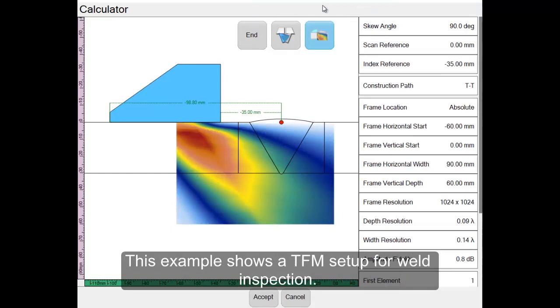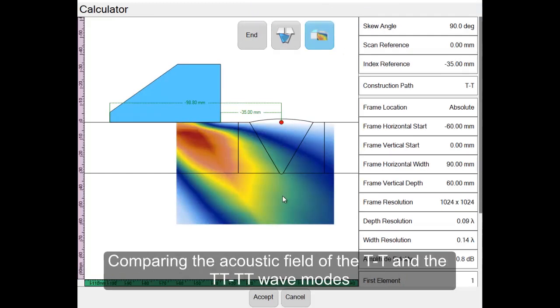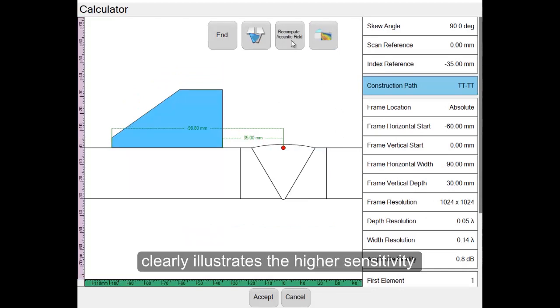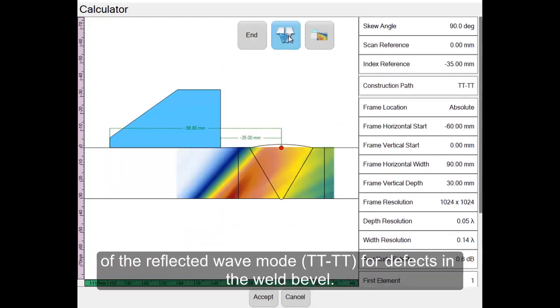This example shows a TFM setup for weld inspection. Comparing the acoustic field of the T-T and the TT-TT wave modes clearly illustrates the higher sensitivity of the reflected wave mode for defects in the weld bevel.